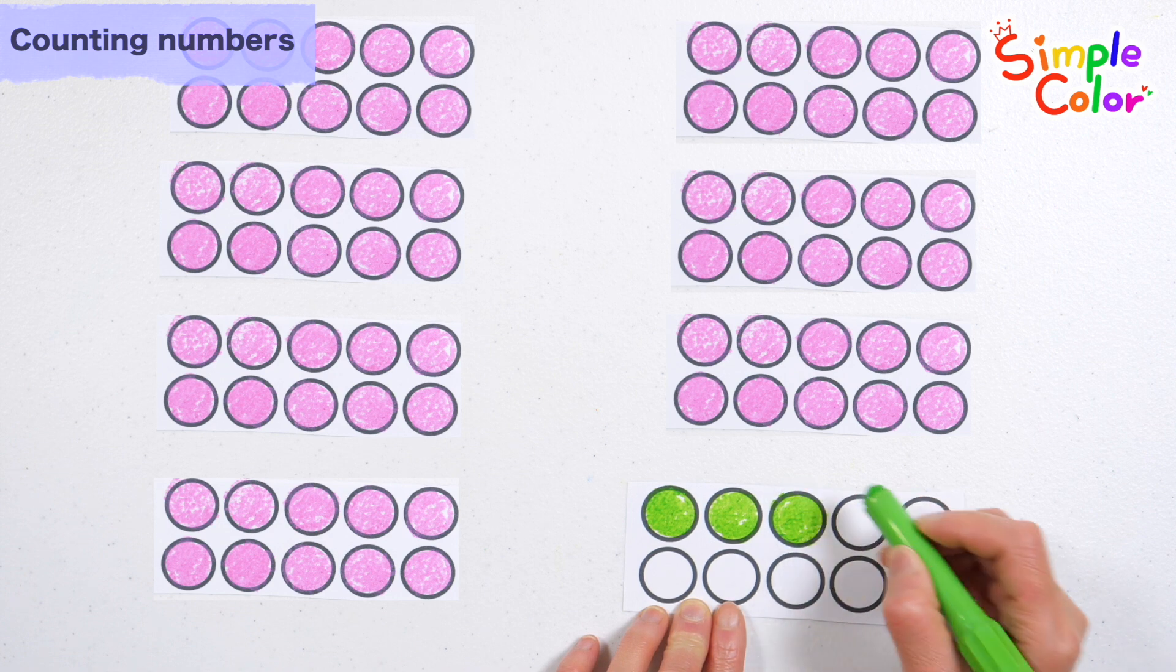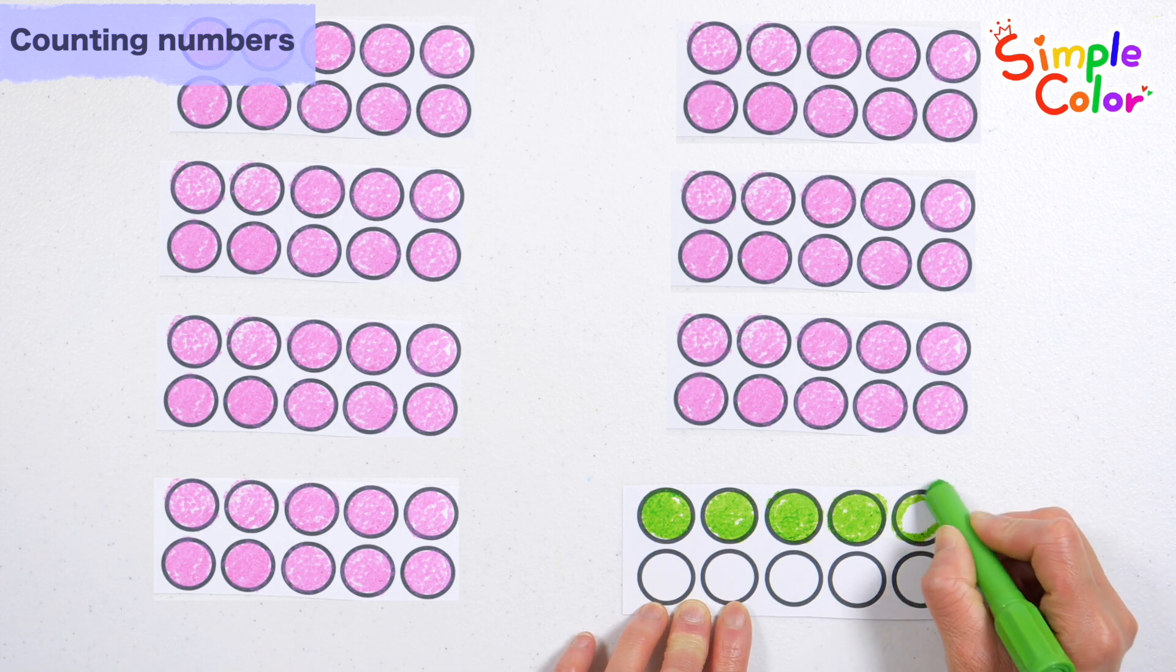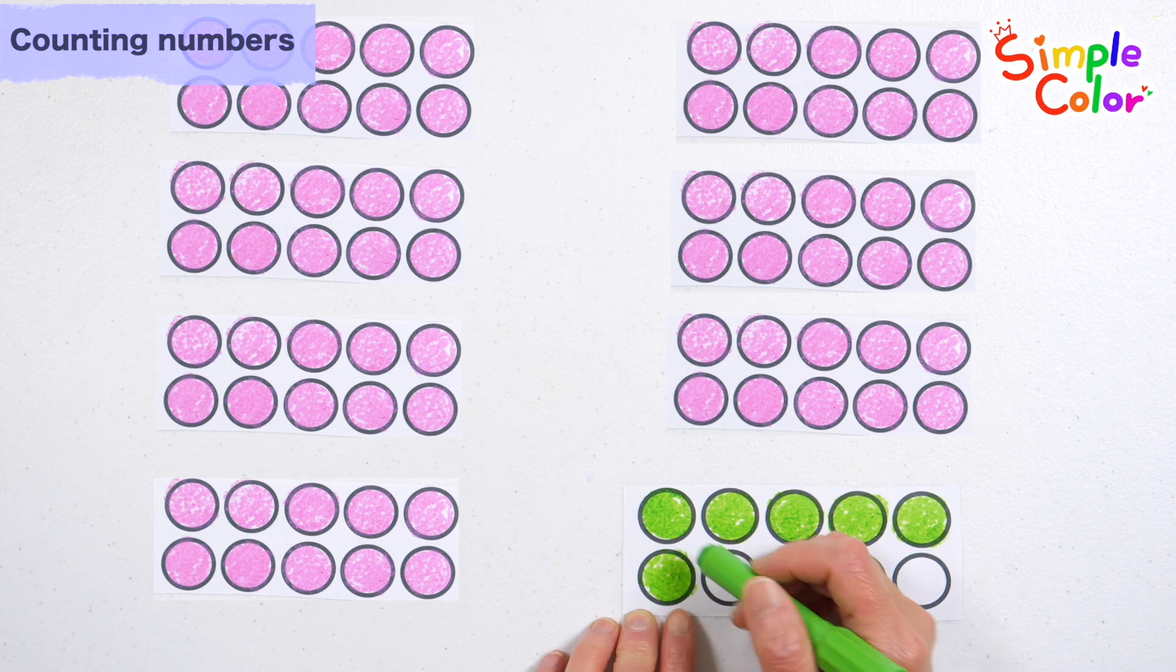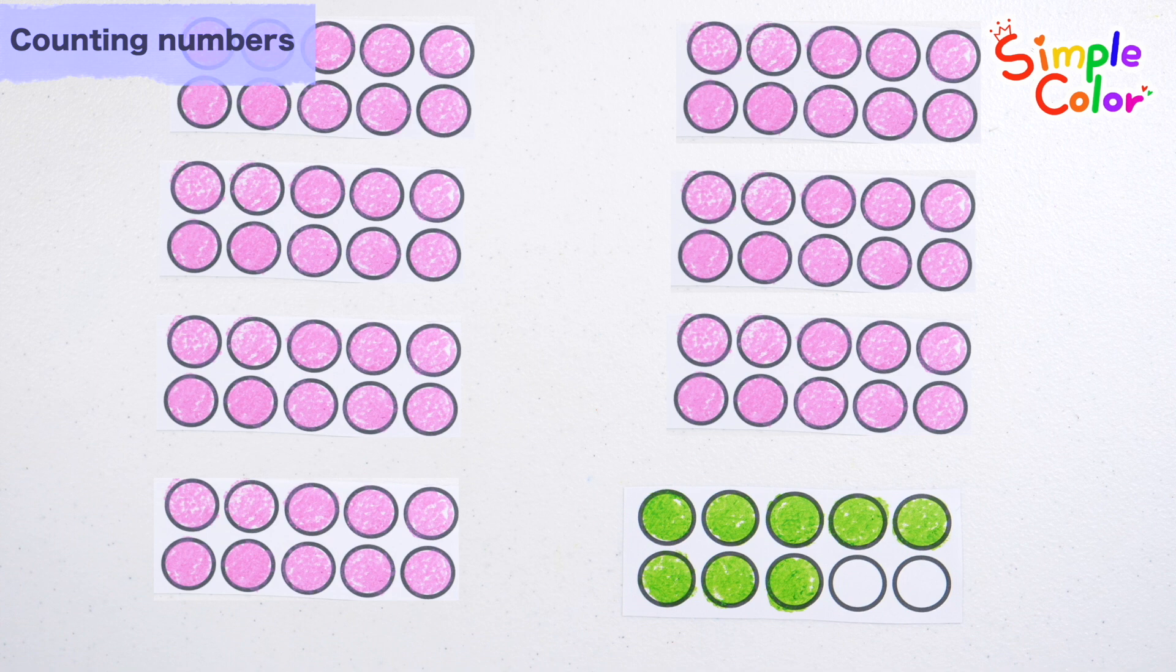72, 73, 74, 75, 76, 77, 78. A total of 78 circles have been colored. Good job!